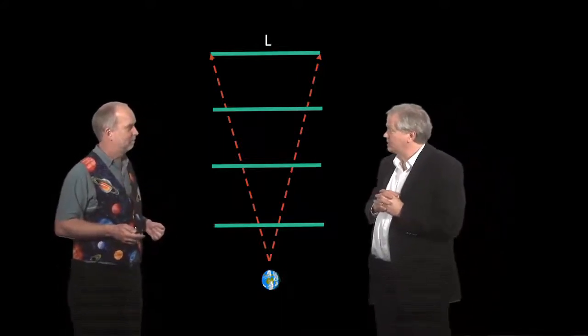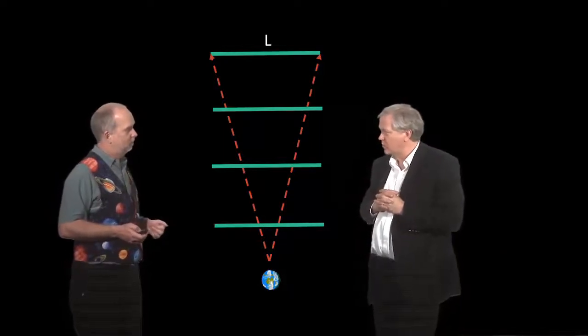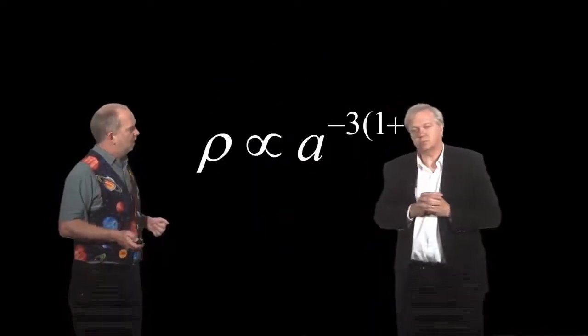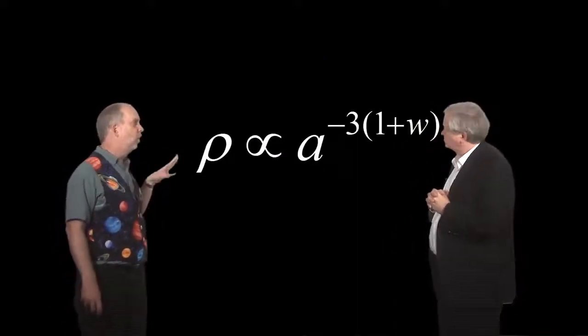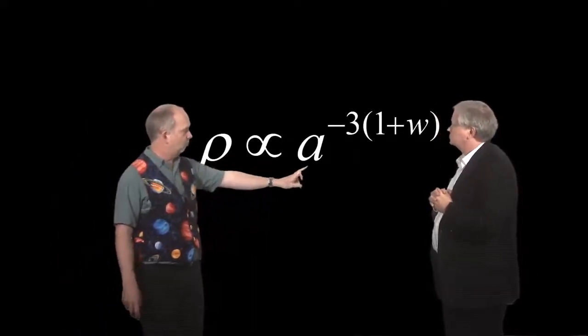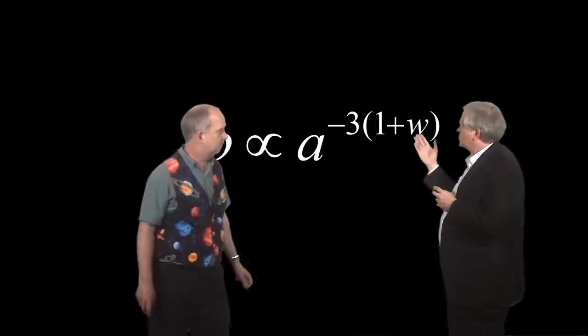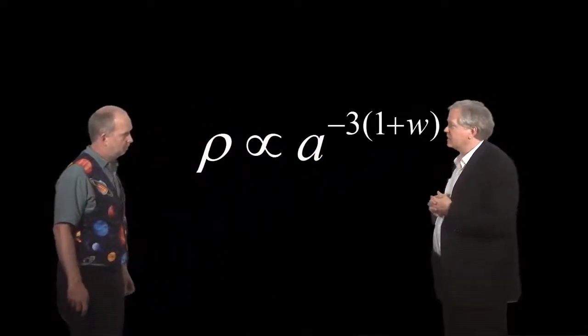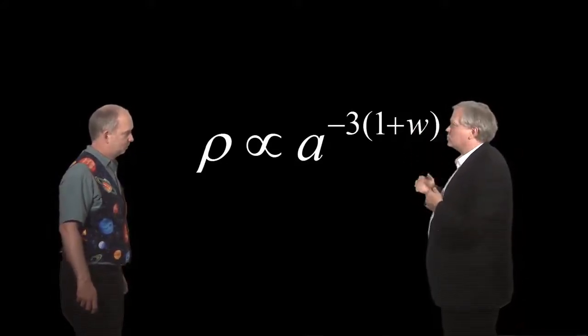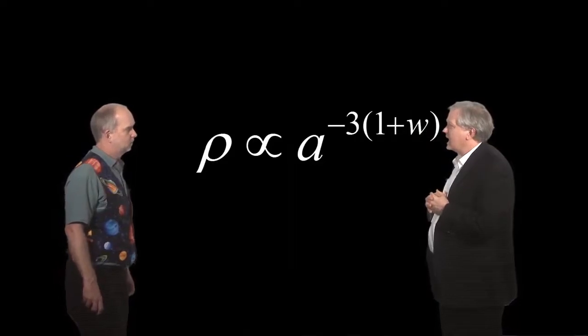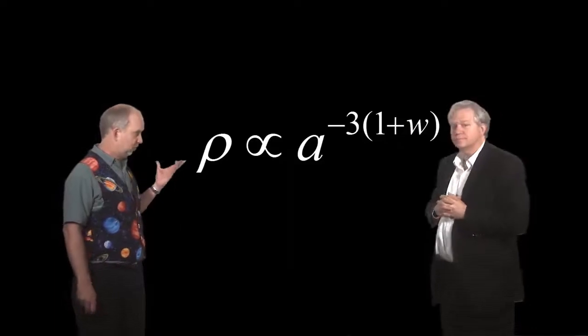Well, we certainly could falsify Einstein's cosmological constant, which makes a prediction that it's always the same everywhere in the universe at all times. Now, it turns out the way we normally parameterize this is we say that the density of this dark stuff, whatever it is, is proportional to the scale factor of the universe to the power written here. And the parameter in question is W. And that W is what we call the equation of state.